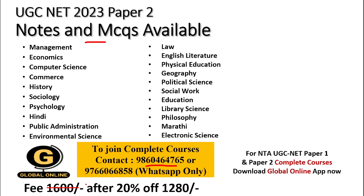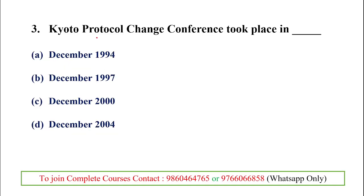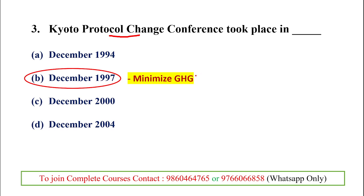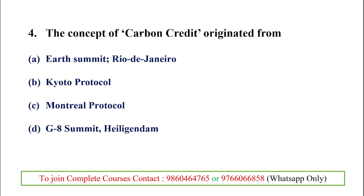The next question relates to the Kyoto Protocol. The Kyoto Protocol conference took place in December 1997. The Kyoto Protocol is also related to carbon credit. Carbon credit is related to greenhouse gases — it is a credit for greenhouse gas emissions reduced or removed from the atmosphere by an emission reduction project.